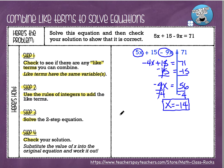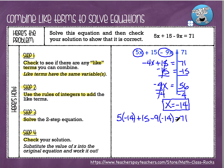Here's how that's going to look: instead of 5x, I'm going to do 5 times negative 14, then bring down the plus 15, then minus 9 times negative 14, and that equals 71. When I'm substituting values, I always like to put the value in parentheses — that helps me remember I need to multiply. So 5 times negative 14 gives me negative 70, plus 15. Negative 9 times negative 14 gives me positive 126, and that equals 71.